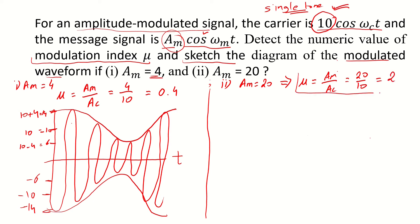If the modulation index is greater than 1, this is a prime example of over modulation.